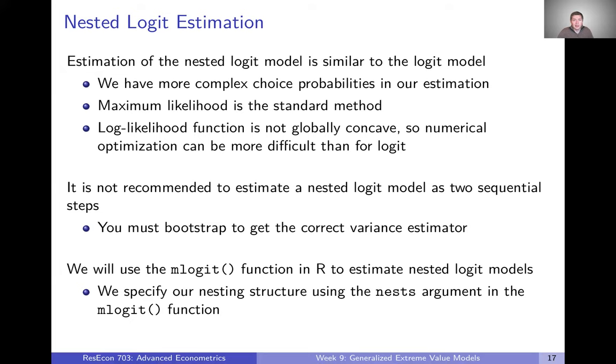I also just want to point out, we talked through that two-step procedure of thinking about the first step as a logit model of nests and then the second step is a logit model of alternatives within that nest. I think that's a great way to conceptualize the nested logit model, but we don't actually want to estimate it that way. Our standard errors or our variance estimator is going to be wrong if we actually estimate this as a sequential two-step estimation procedure. We're going to have to do something like bootstrapping to get the correct variance estimator. And there might be actually some other empirical problems that pop up when we try to do it as a sequential two-step model, so just use those total choice probabilities, think about it as one big step instead of the two smaller steps when you actually do the estimation.